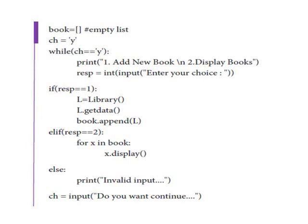For the else-if condition, resp equals 2 is the second choice. We use a for loop — for x in book — and for each value x, we call x.display() to display the book information.